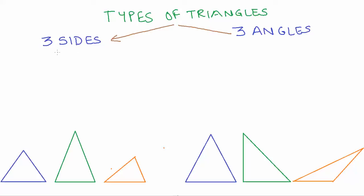Let's first start looking at the sides. A triangle requires three line segments, and with those three sides we could have three cases. The first case is all three sides being equal.